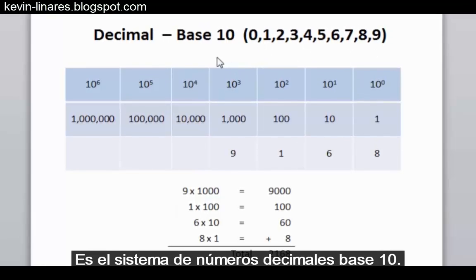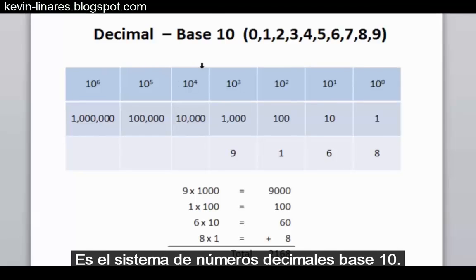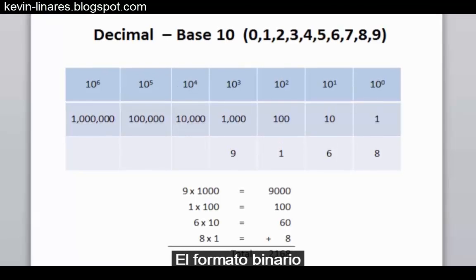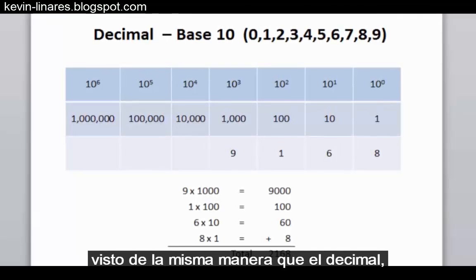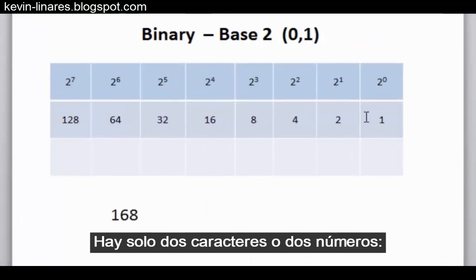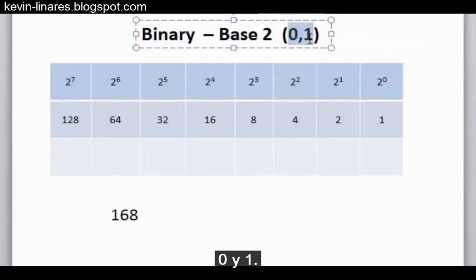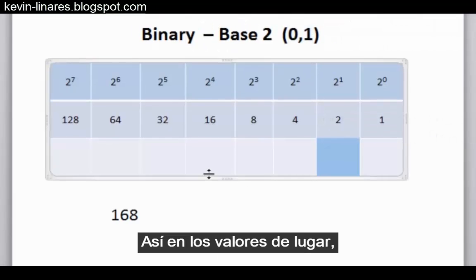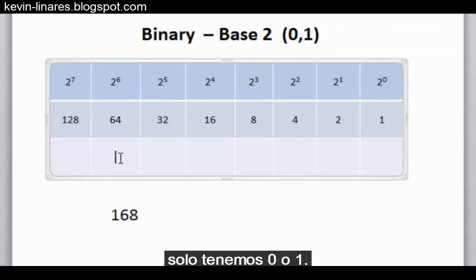This is the base 10 decimal number system. If we consider binary and look at it in the same light as decimal, binary is a base 2 number system. There's only two characters or two numbers, 0 and 1. So under the place values, we can only have 0s or 1s.